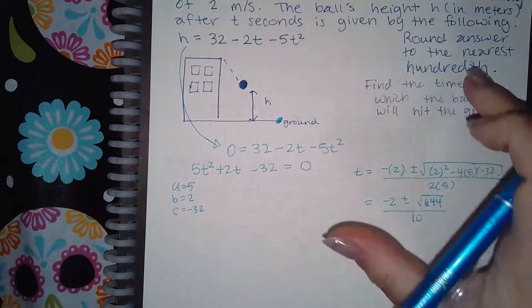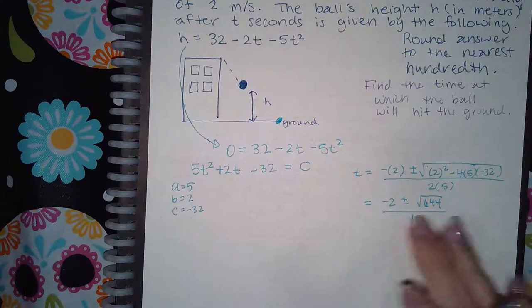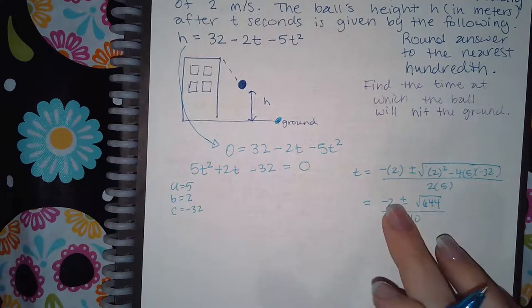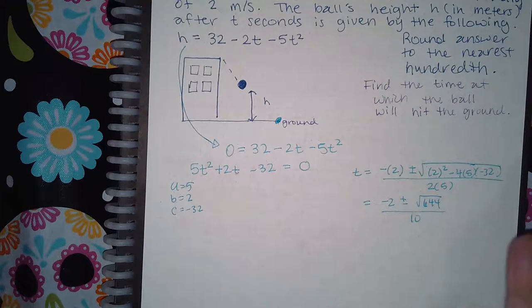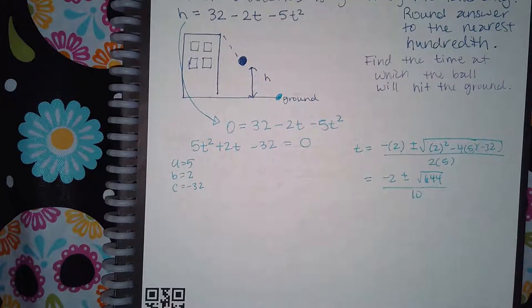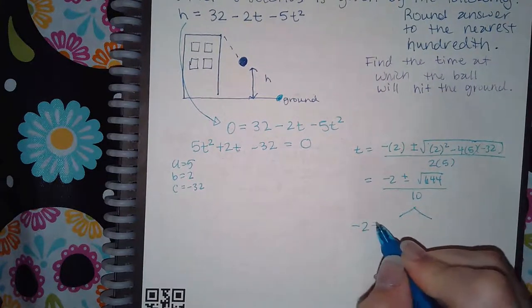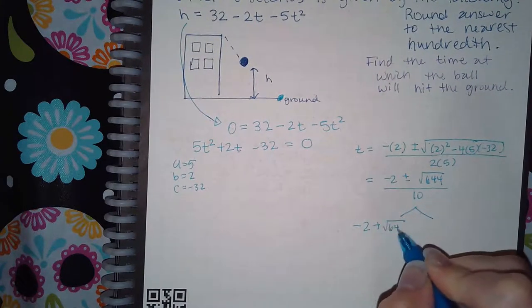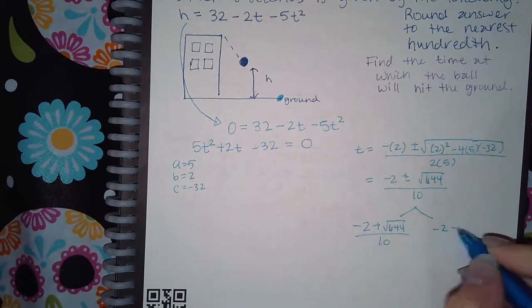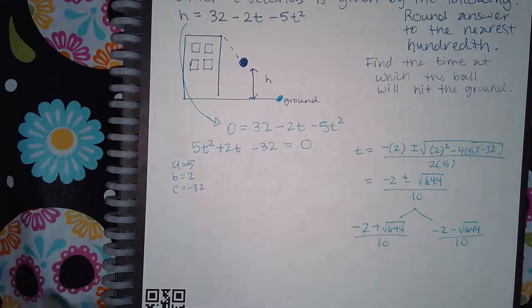Now, it does tell me to round my answer to the nearest hundredth, so I don't need to simplify this, take out what I can, simplify the fraction. It's unnecessary because all I'm going to do is type it all in the calculator anyway to get a decimal. So I'm going to split this into the two responses and see what decimals we get.